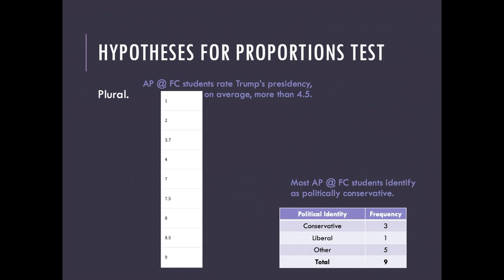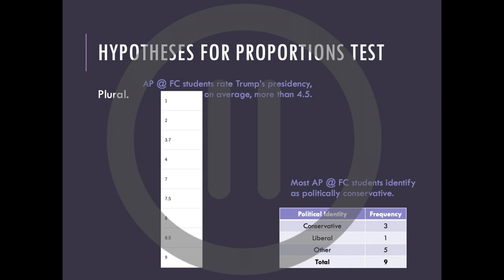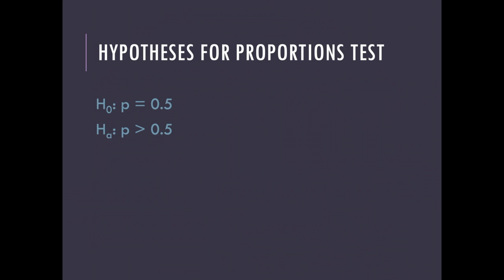Now we're jumping into the big hypothesis test — hypotheses, plural. I want you to give the multiple hypotheses that are appropriate for running the proportions test. Again, I'll let you choose which data set is appropriate for proportions and hypothesize about what your hypotheses should be. The stuff we're trying to prove becomes the alternative hypothesis. What are the appropriate hypotheses for that situation? After pausing, the hypotheses you should have come up with are: P equals 0.5 or P is greater than 0.5.